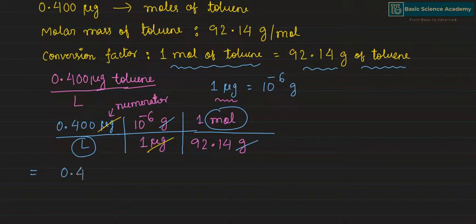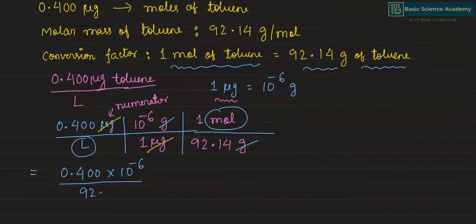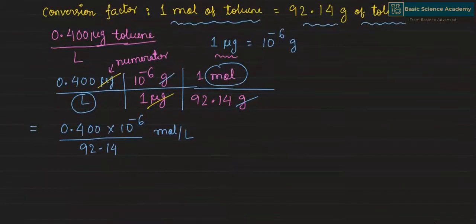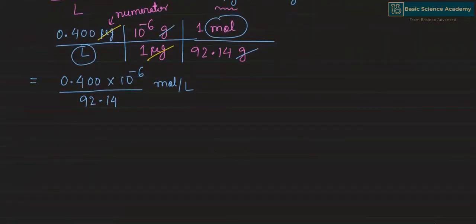This gives us 0.400 multiplied by 10 to the power of minus 6, divided by 92.14 grams, with units of mole per liter. Mole per liter is molarity.